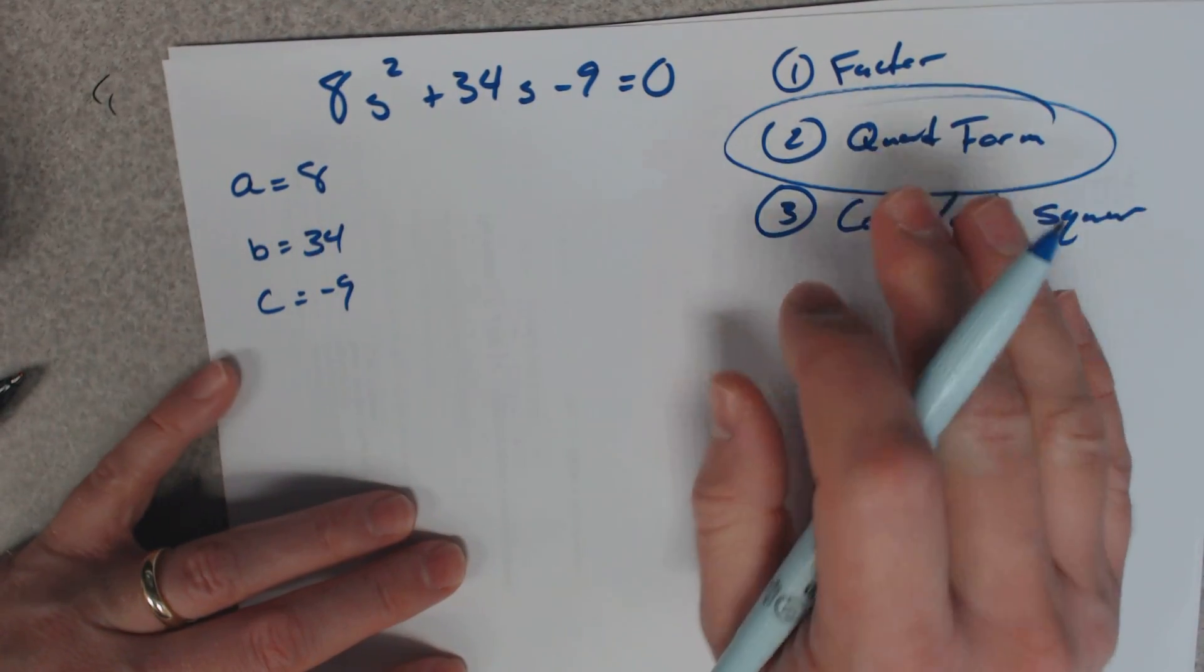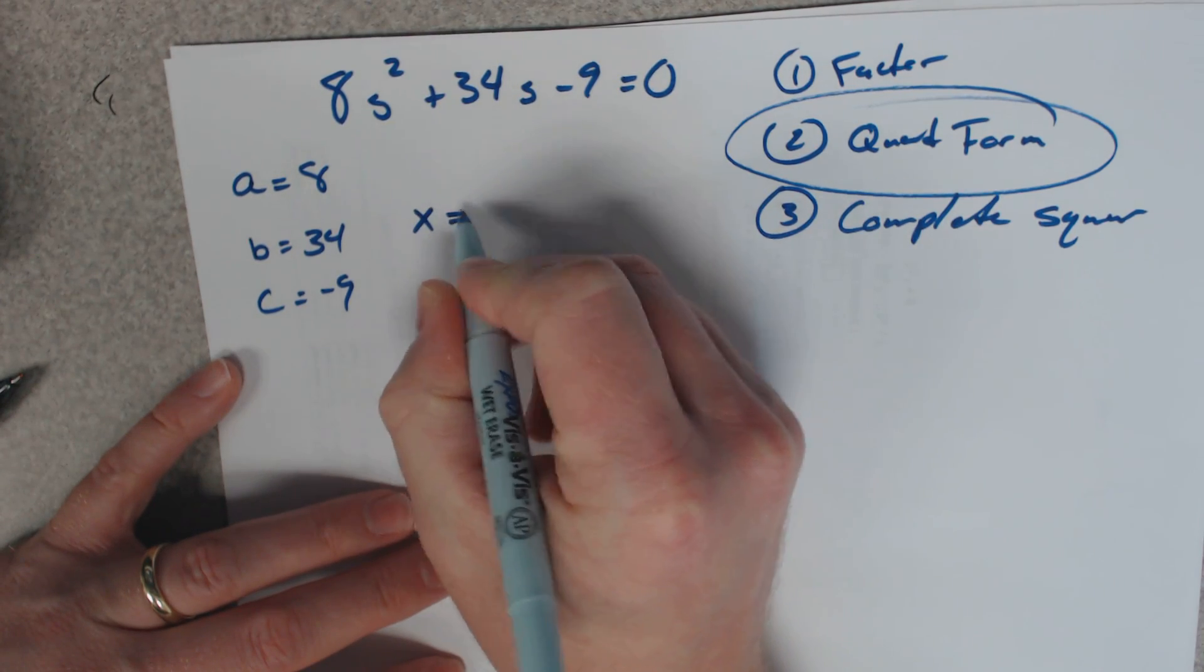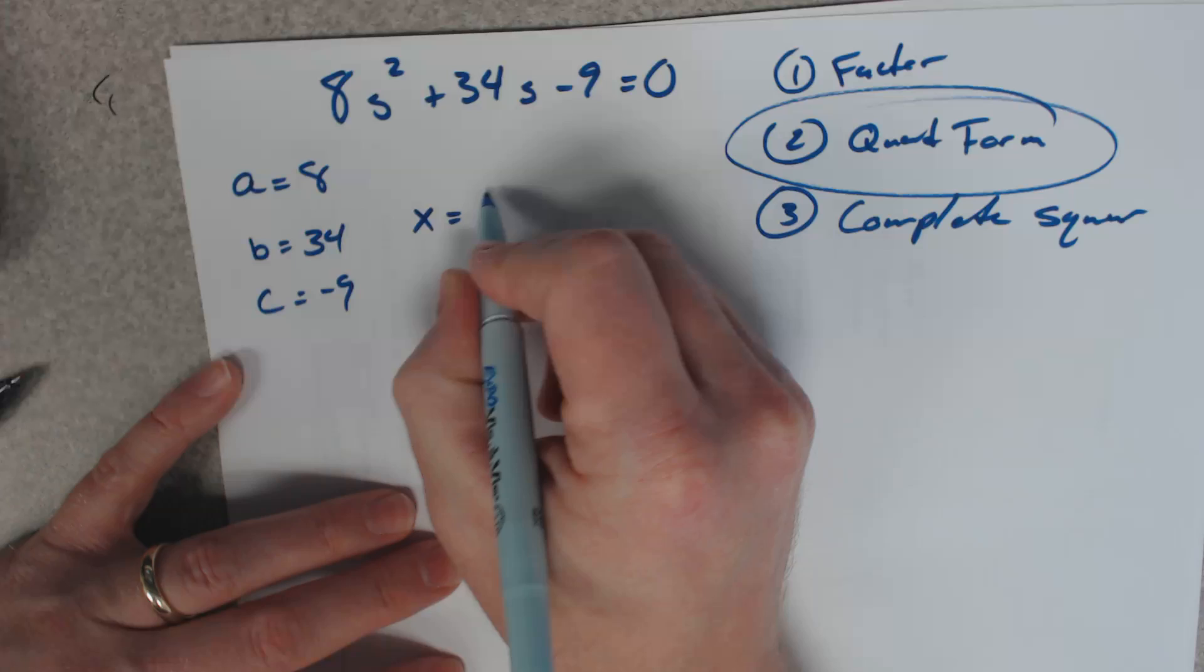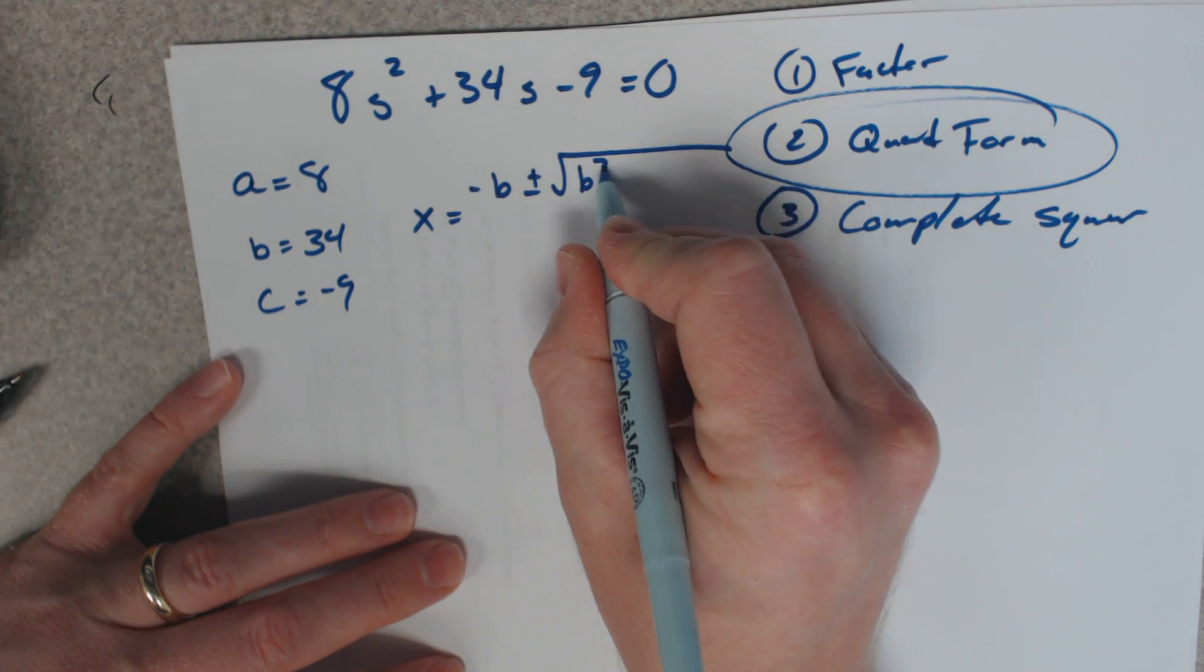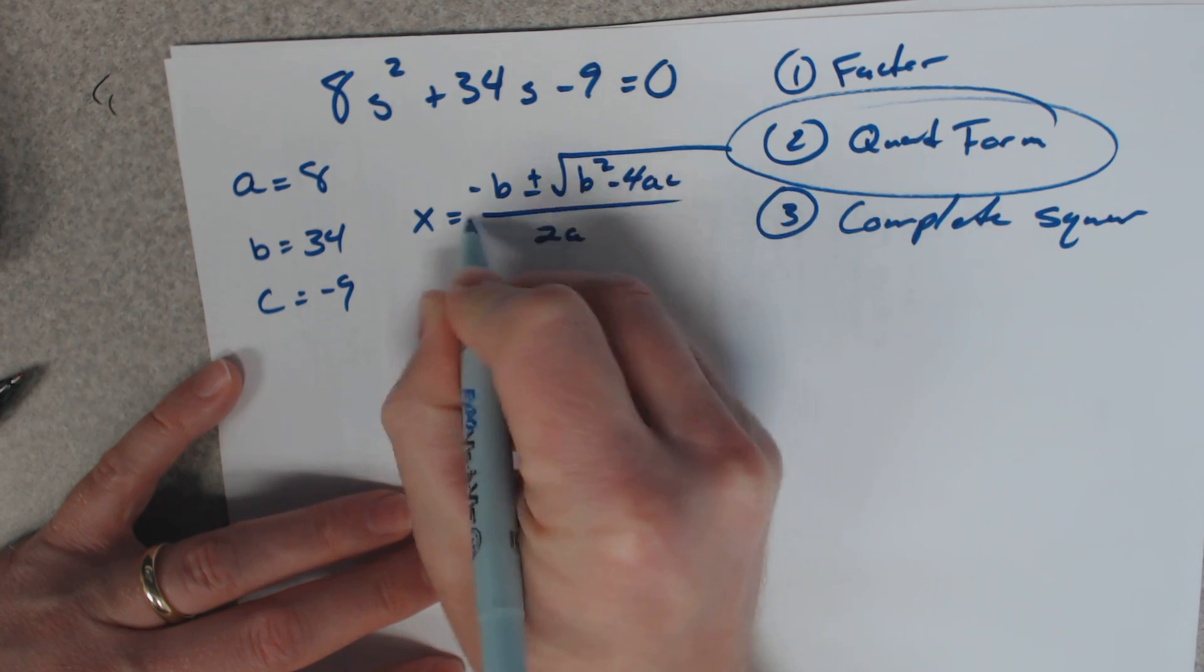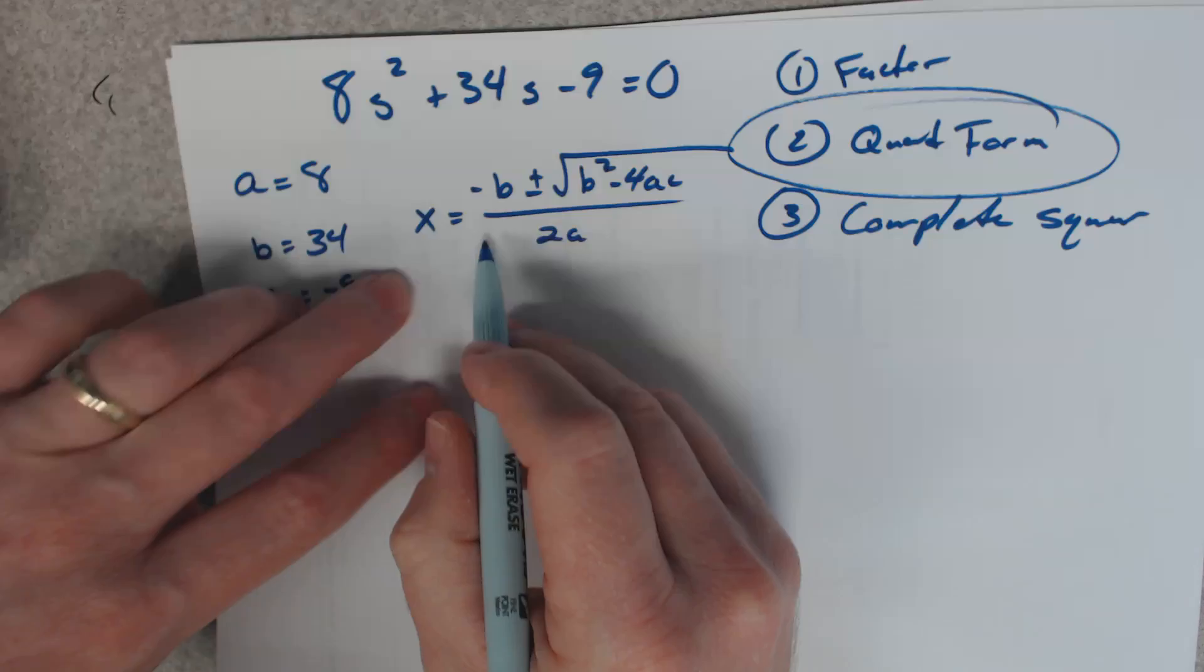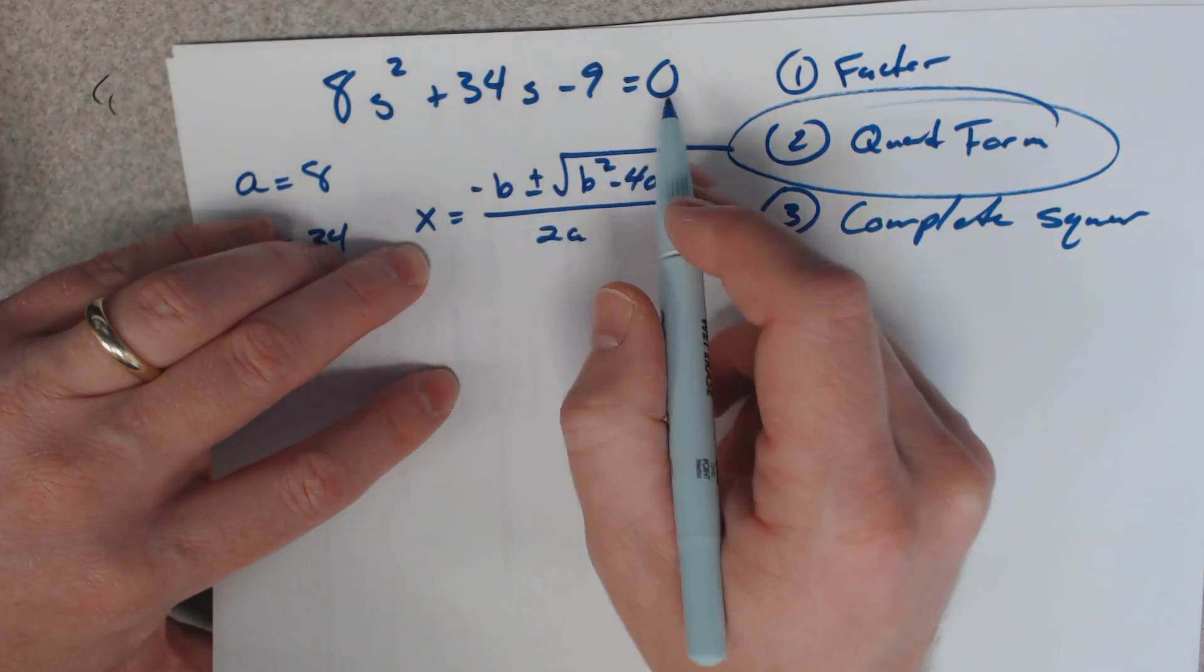Now, if you use the quadratic formula, the quadratic formula says that the x equals, or in this case, s equals negative b plus minus square root of b squared minus 4ac all over 2a. It's all over 2a.